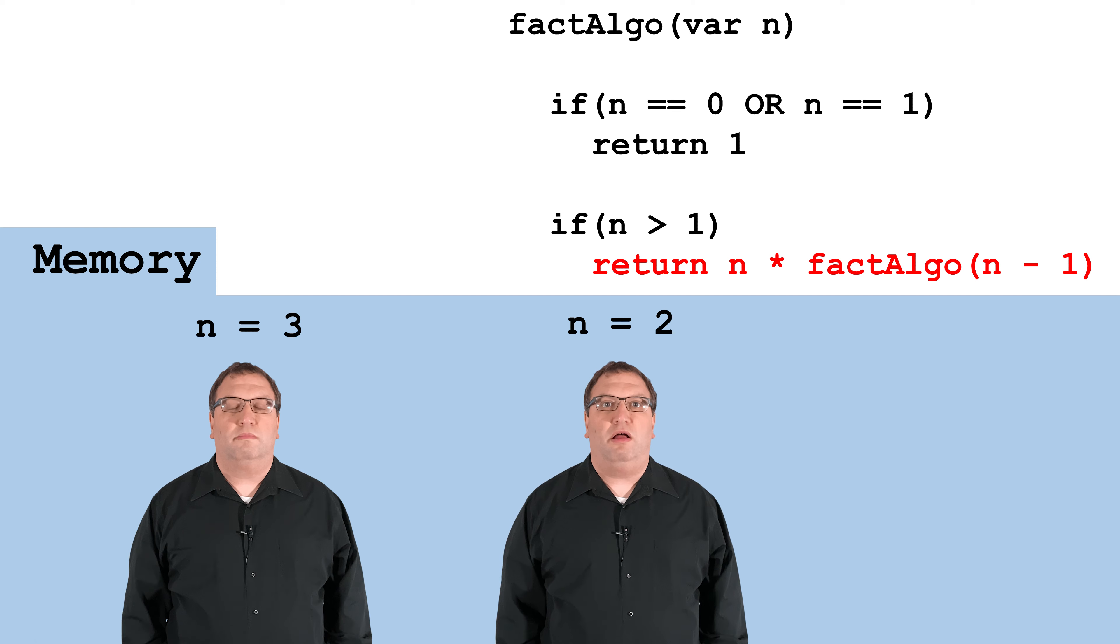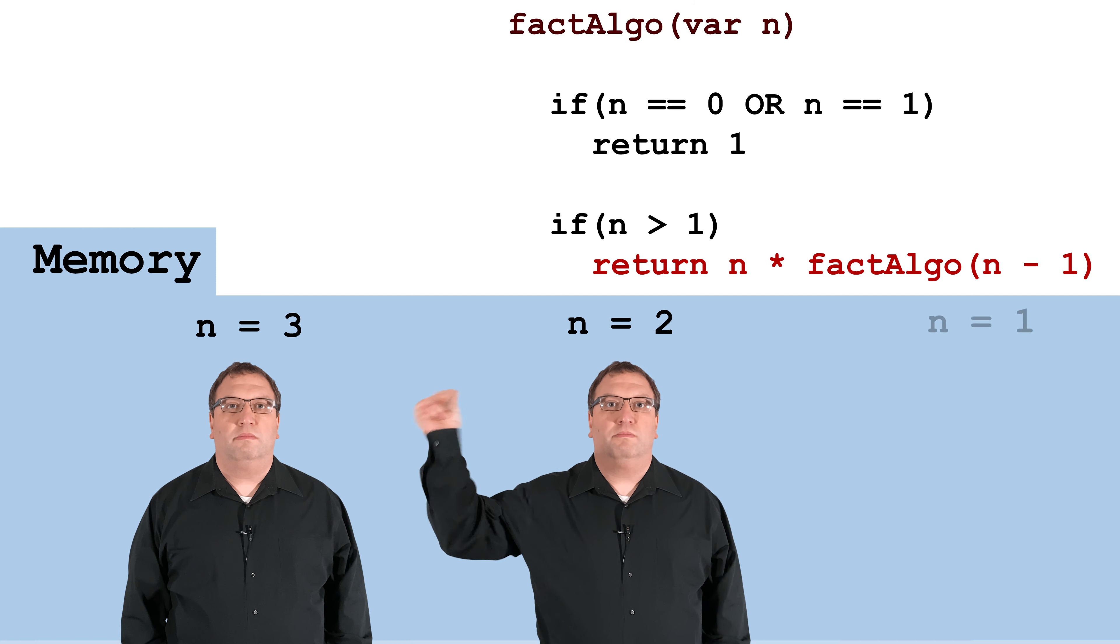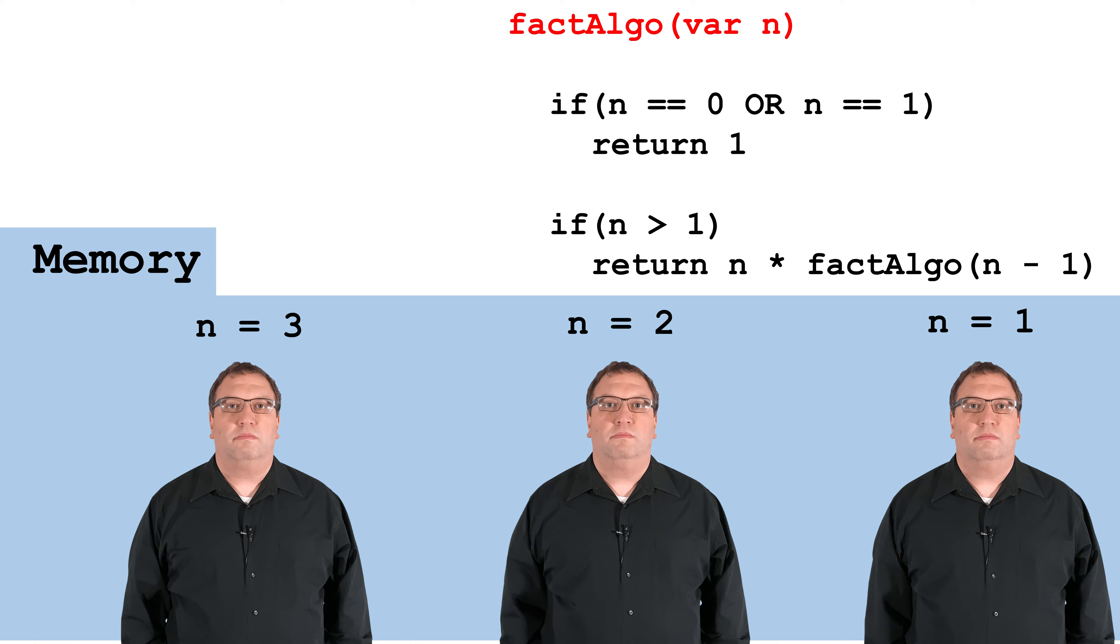However, 2 is greater than 1, so I'll execute the indented line of code. I'm going to multiply 2 times whatever 1 factorial is. To figure out 1 factorial, I'll call fact-algo again.